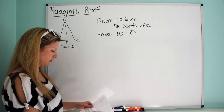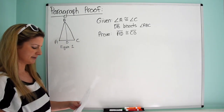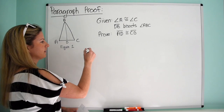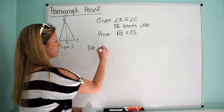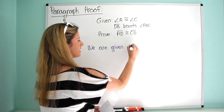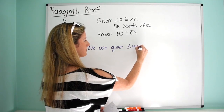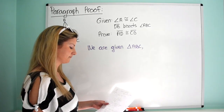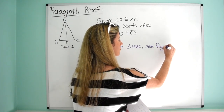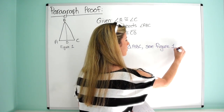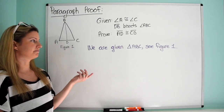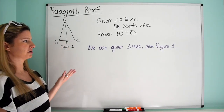So what we're going to start with — and again, every teacher is different — we're going to write in purple the proof. We are given triangle ABC, see figure one. Not every teacher may require that you write that first step, but I think it's good because then we know what we're talking about.